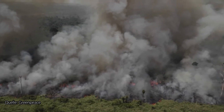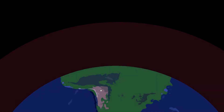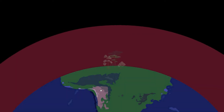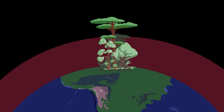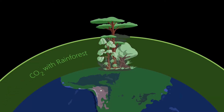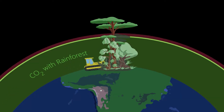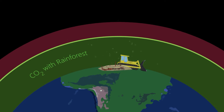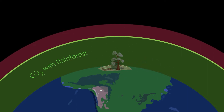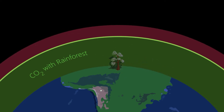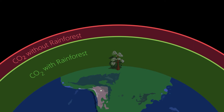The rainforest binds CO2 that would otherwise increase the greenhouse effect in the atmosphere and thus accelerate climate change. The clearing of rainforest releases this CO2, resulting in degraded land that is far from being able to replace the function as a CO2 sink.